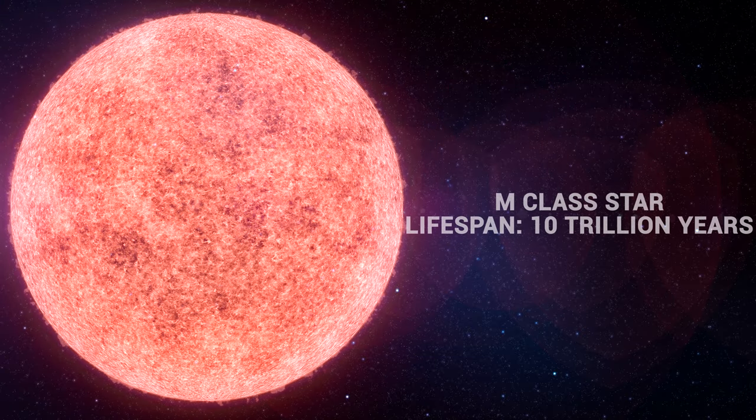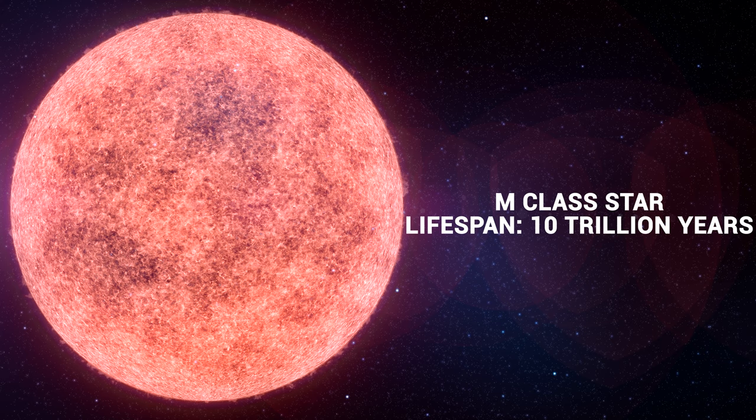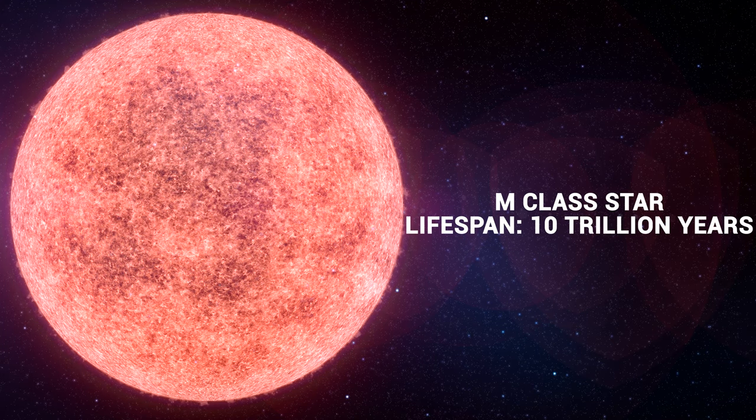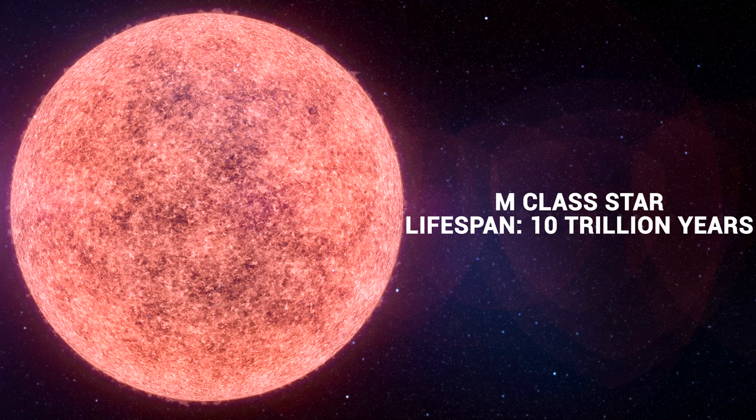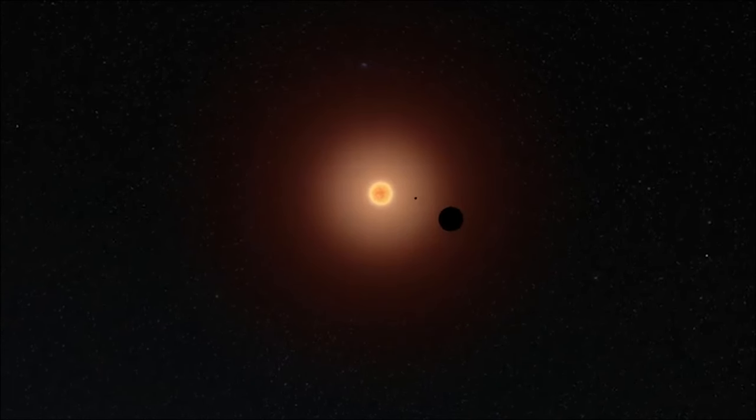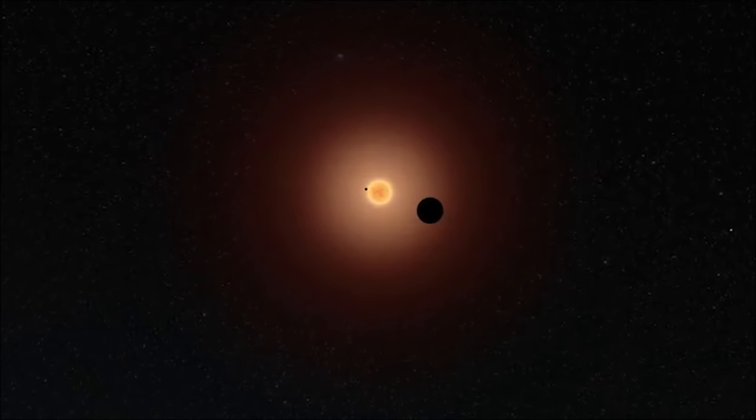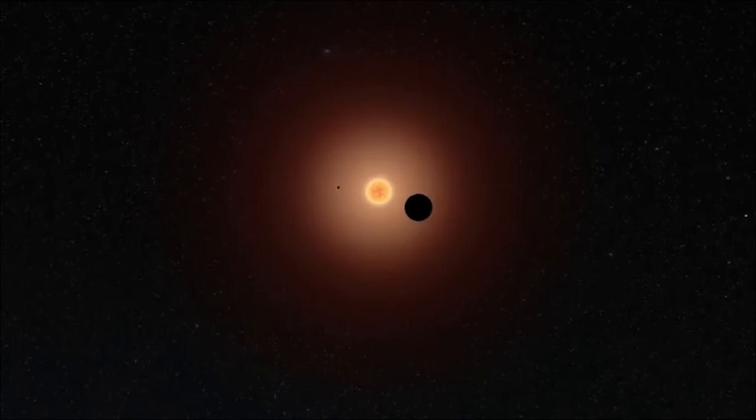M-class stars are cool red stars and include red dwarfs. Red dwarfs are tiny stars with masses ranging from 60% to just 7% the mass of our sun. As such a small mass, a red dwarf could live for up to 10 trillion years. The closest known star, other than our sun, is a red dwarf star called Proxima Centauri, a red dwarf just 4.2 light years away.